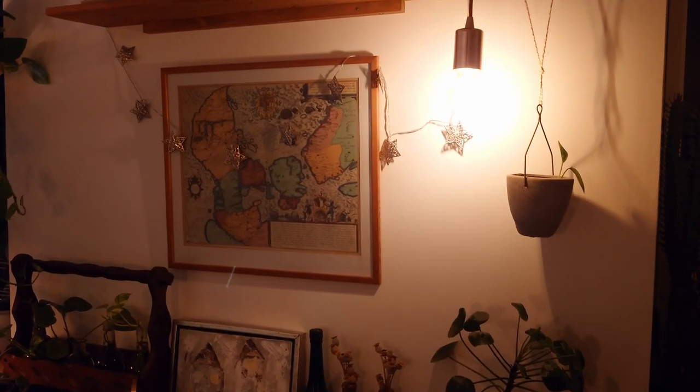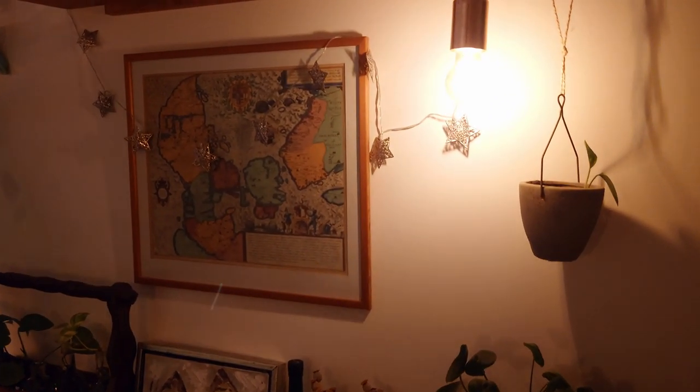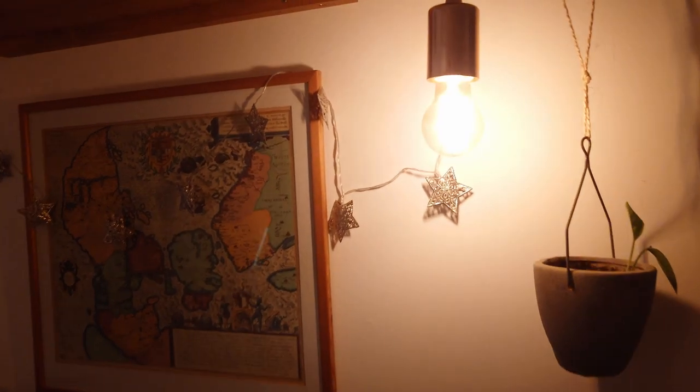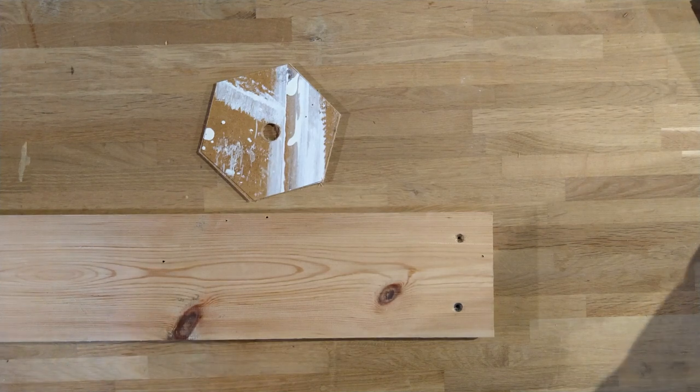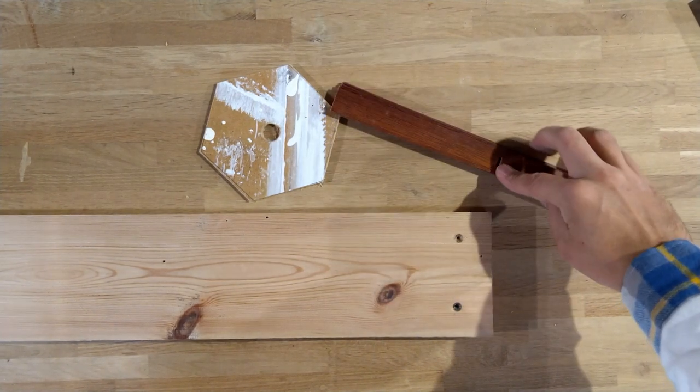This light is way too bright and desperately needs a lampshade, so that's what I'm gonna make today. This is a piece of pine floorboard, a piece of masonite that I cut into a hexagon shape.